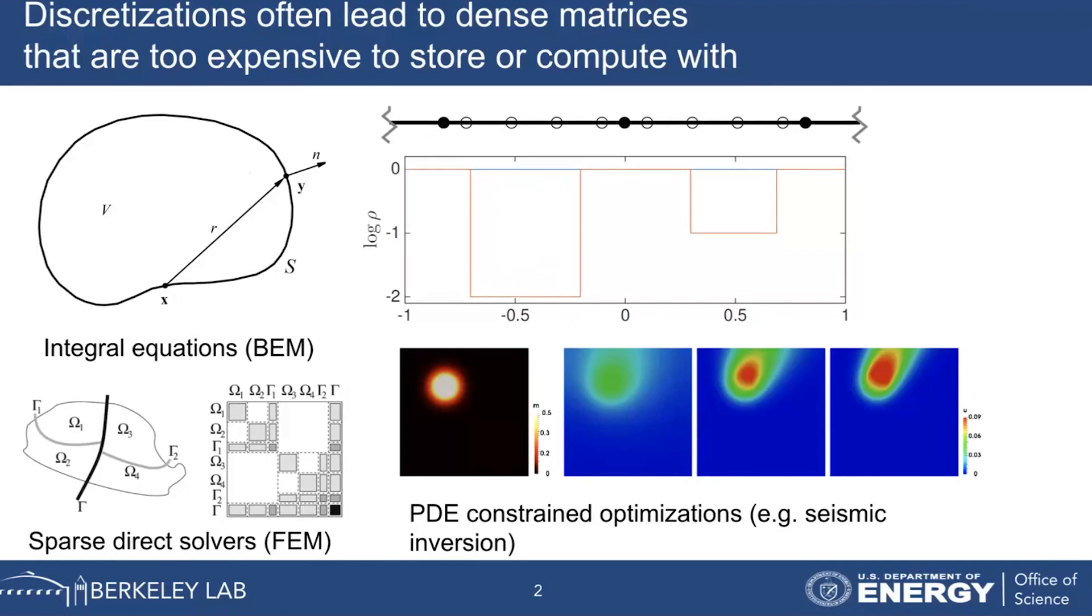For example, we have integral equations, which we tackle with boundary element methods. We have sparse direct solvers from the finite element method, where these diagonal blocks could be filled in and become dense. And we have Hessians from PDE-constrained optimization, where you need to infer parameter models from observations. For example, seismic inversion or source inversion.